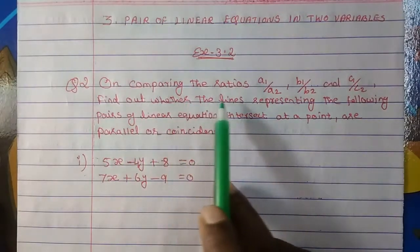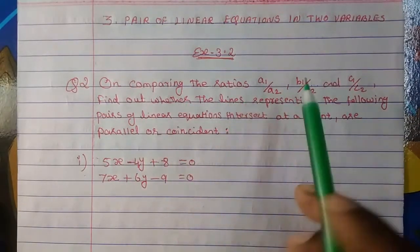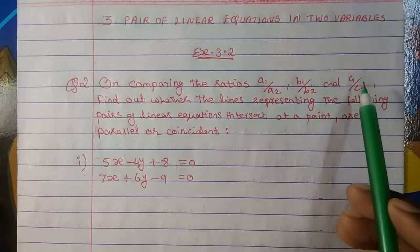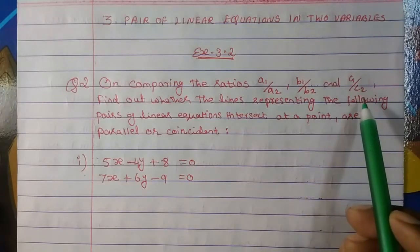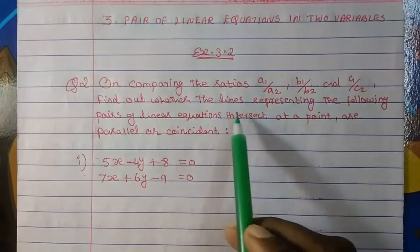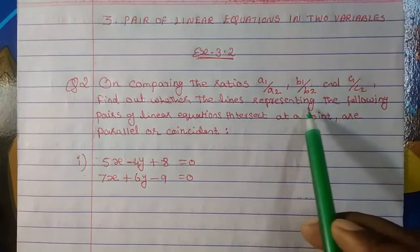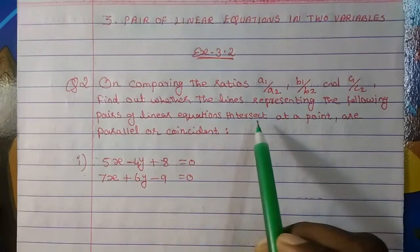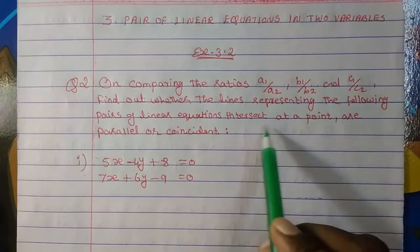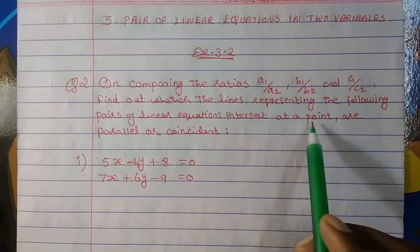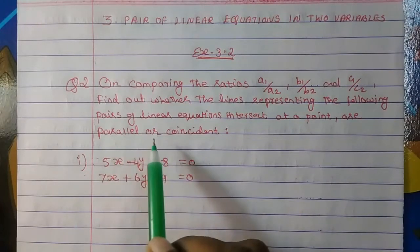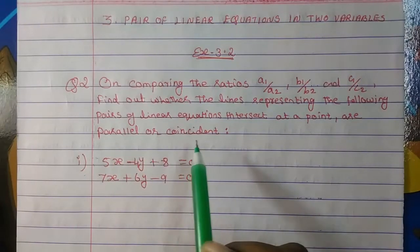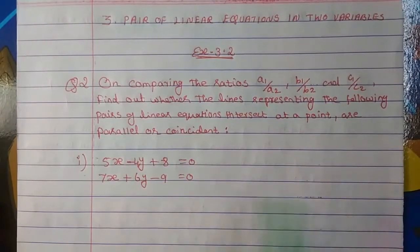On comparing the ratios a1 upon a2, b1 upon b2, and c1 upon c2, find out whether the lines representing the following pairs of linear equations intersect at a point, are parallel or coincident.